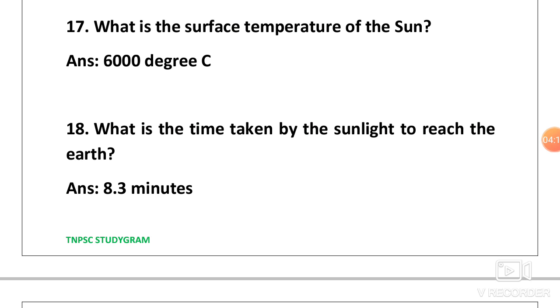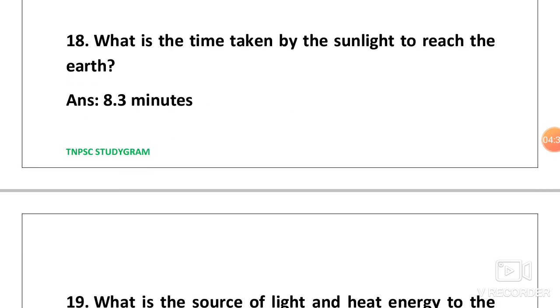Next one, what is the surface temperature of the sun? Answer is 6,000 degree Celsius. That is 6,000 sun surface temperature. You have so many starting with S. Six sun, so 6,000 degree Celsius.